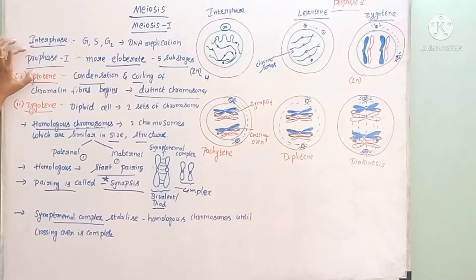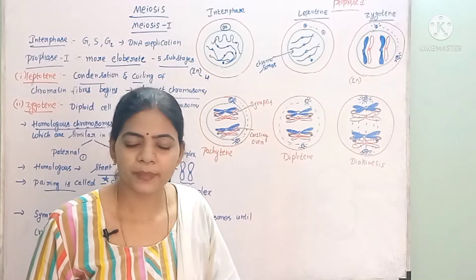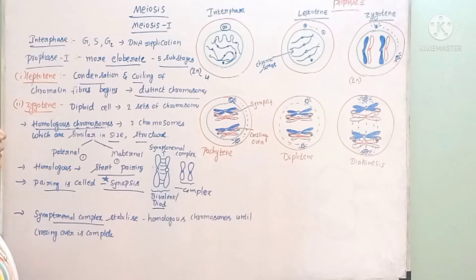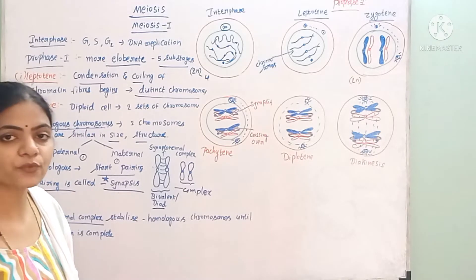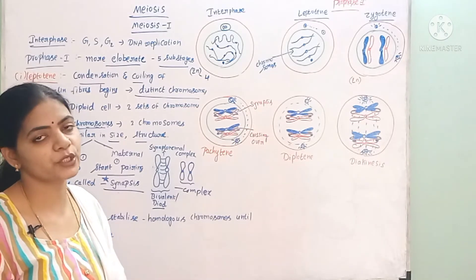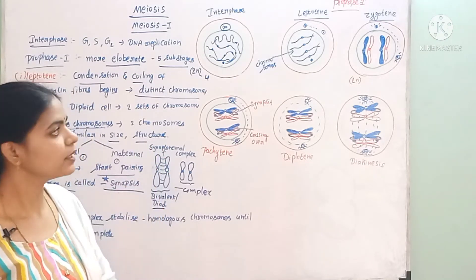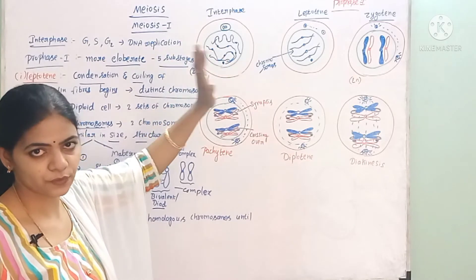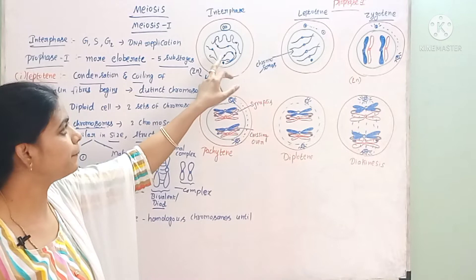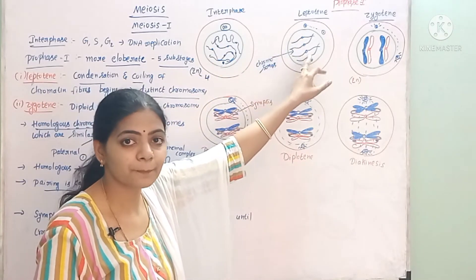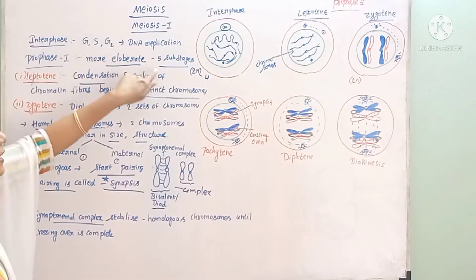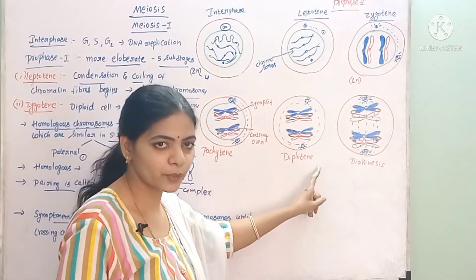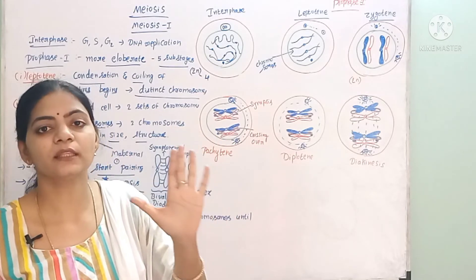The first stage of Meiosis 1 is Prophase 1. In mitosis we also have prophase, metaphase, anaphase, telophase — but that prophase is different from Prophase 1 of Meiosis 1, because Prophase 1 is more elaborate and is the longest phase. It consists of 5 sub-stages: leptotene, zygotene, pachytene, diplotene, and diakinesis. These are the 5 sub-stages present in Prophase 1.